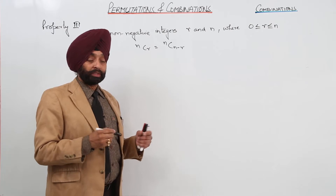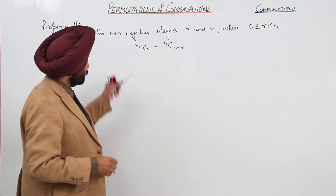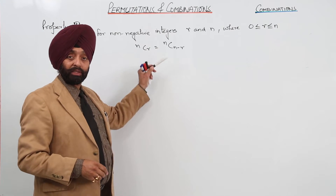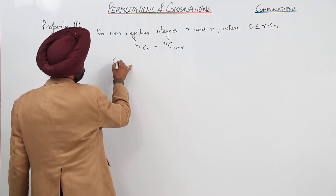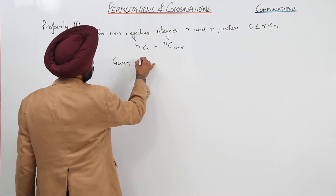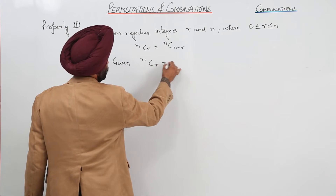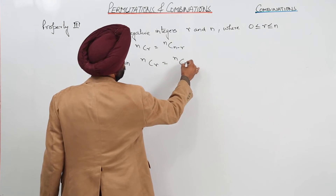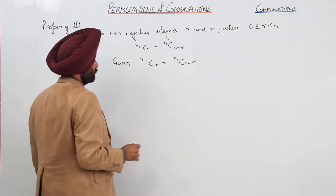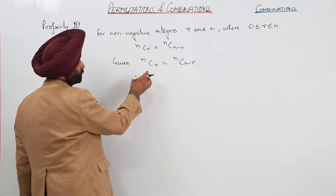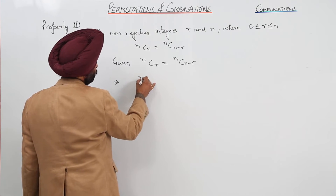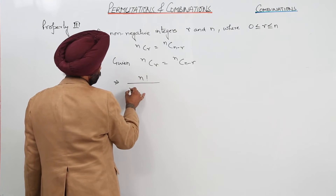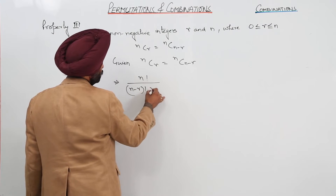Now let's go for property 3. nCr is equal to nC(n minus r). Given nCr is equal to nC(n minus r), using the combination formula nCr, we can write it as n factorial upon n minus r factorial with r factorial.